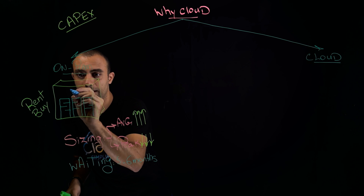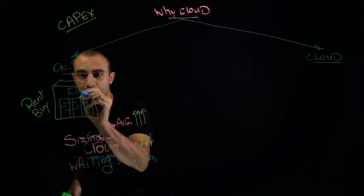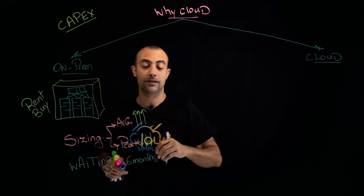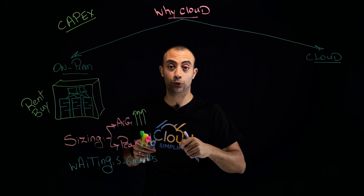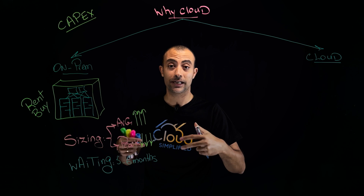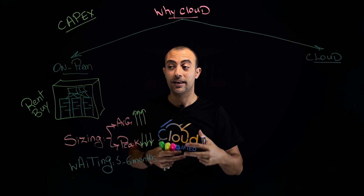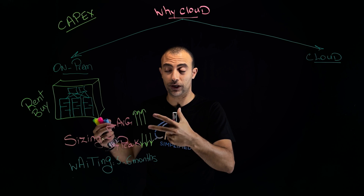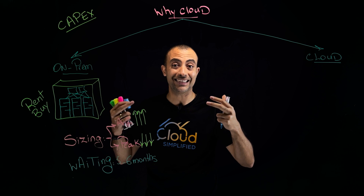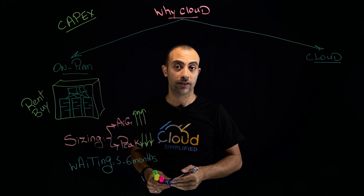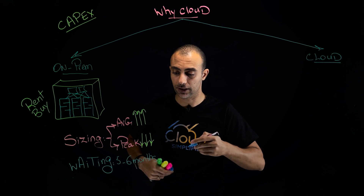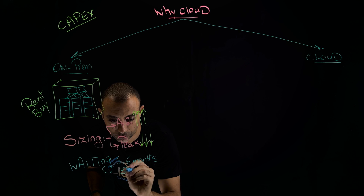Then you connect the networking using a spine-and-leaf architecture, do cabling, tagging, and configure routing, switching, subnets, and VLANs. After that you deploy virtualization on the servers, then deploy the application, test it, and finally go live. Being optimistic, this entire process takes another three months.